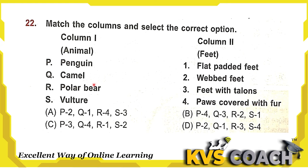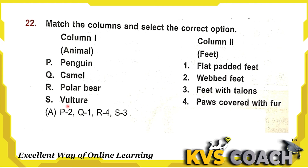Next question: match the column — animals and their feet. Penguin has webbed feet — P matches 2. Camel has flat padded feet — Q matches 1. Polar bear has paws covered with fur — R matches 4. Vulture has feet with talons — S matches 3. So the right answer is P2, Q1, R4, S3 — option A.